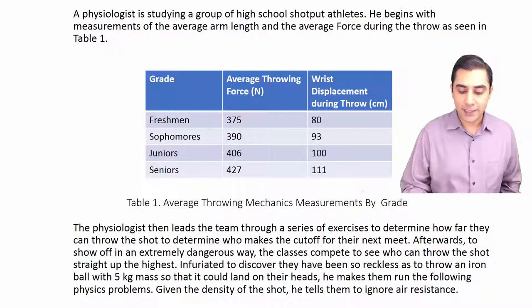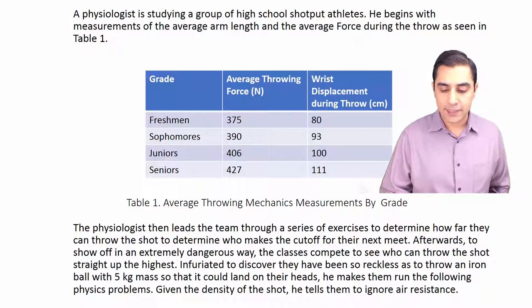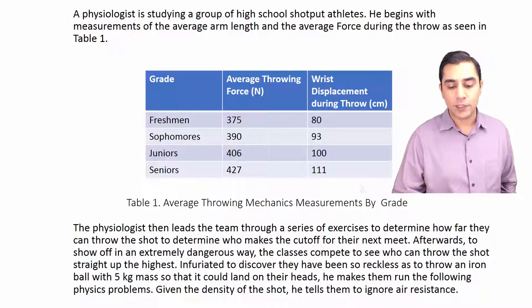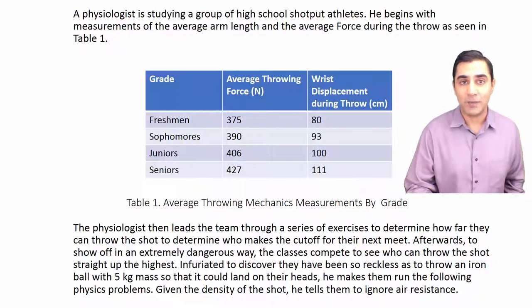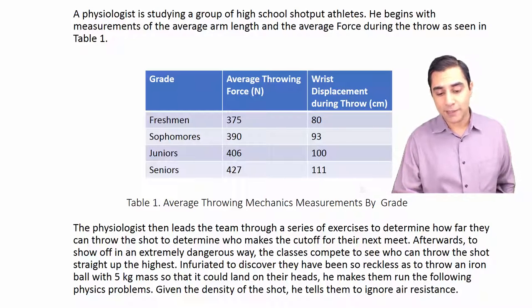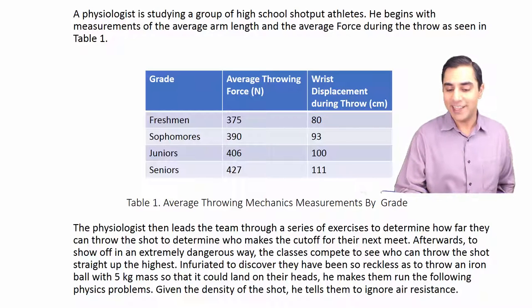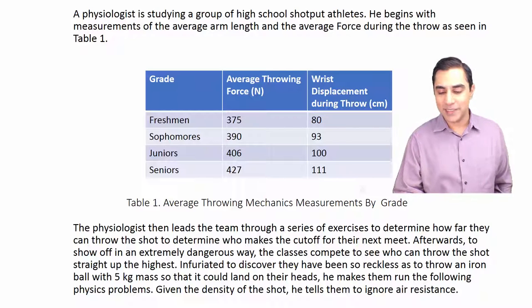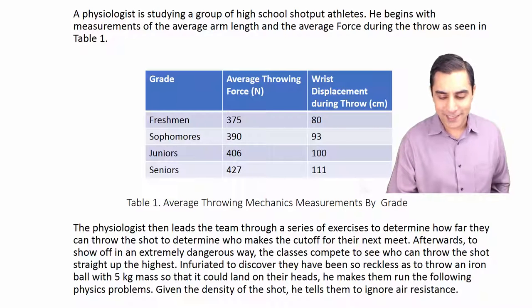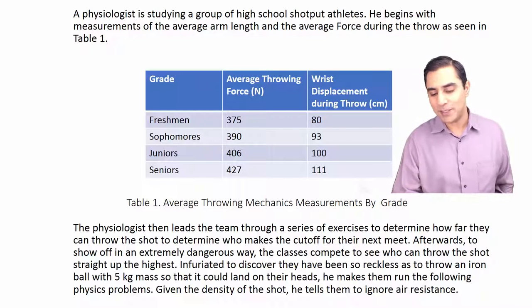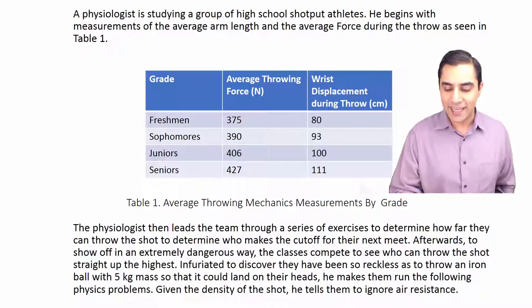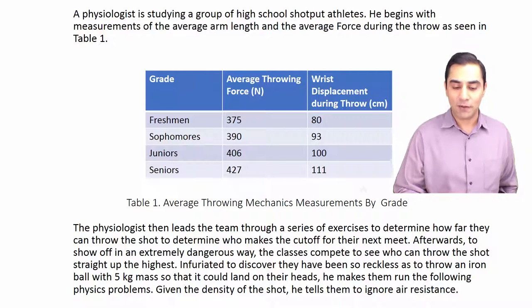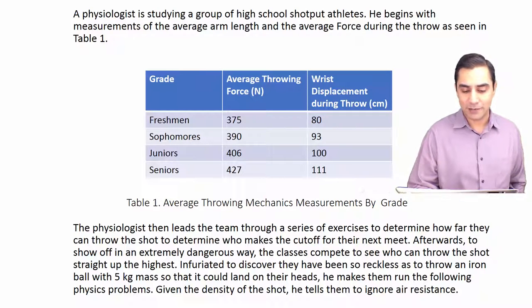The physiologist then leads the team through a series of exercises to determine how far they can throw the shot, to determine who makes the cutoff for their next meet. Afterwards, to show off in an extremely dangerous way, the class competes to see who can throw the shot straight up the highest. Infuriated to discover they've been so reckless as to throw an iron ball of five kilograms mass so it could land on their heads, he makes them run the following series of physics problems.